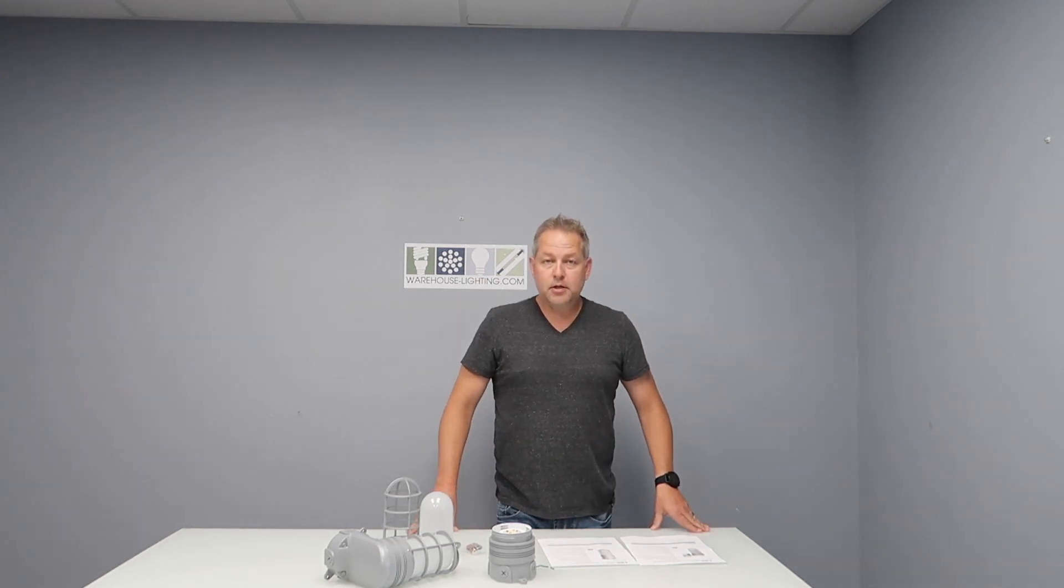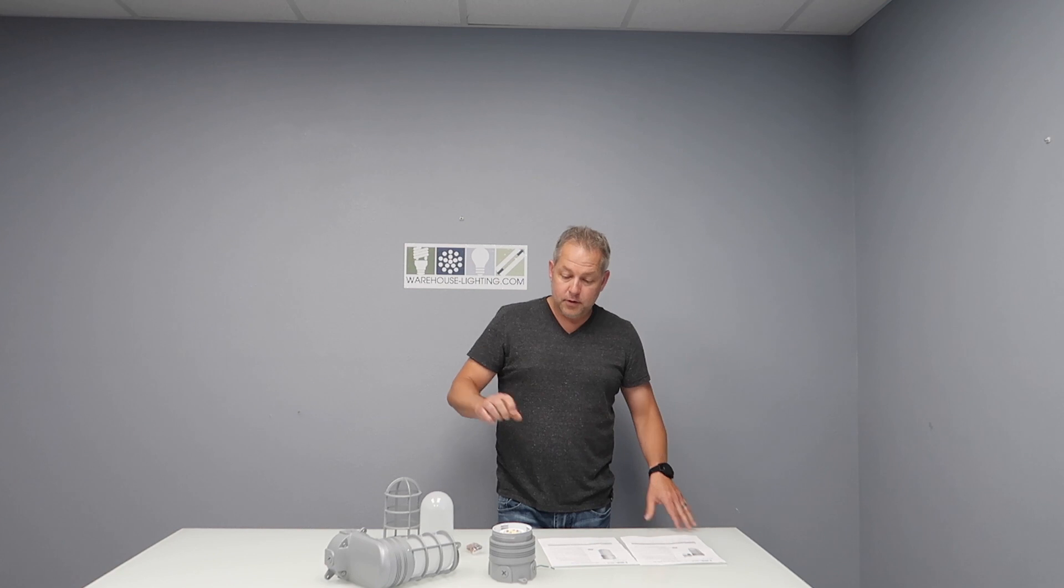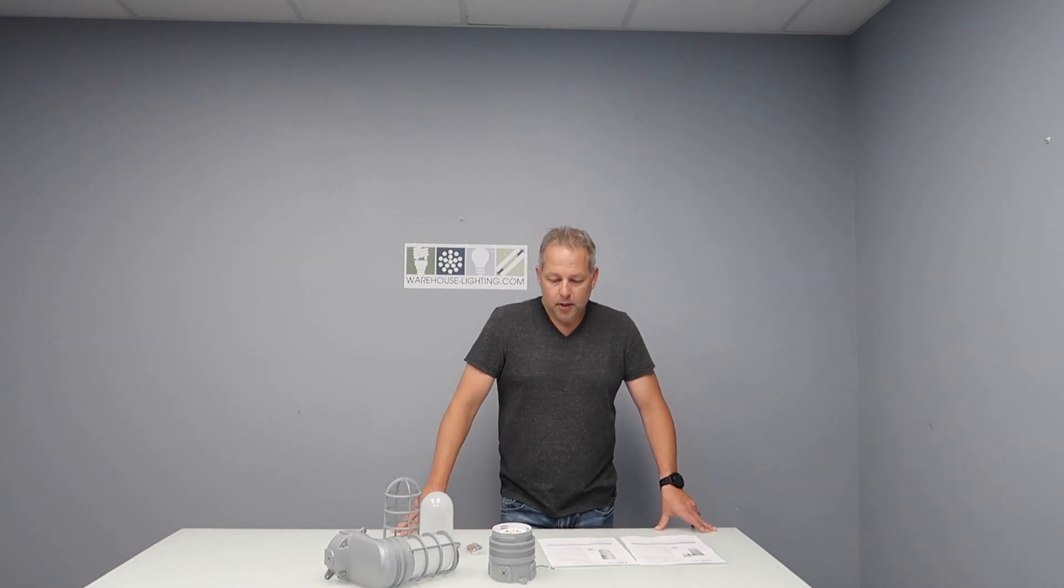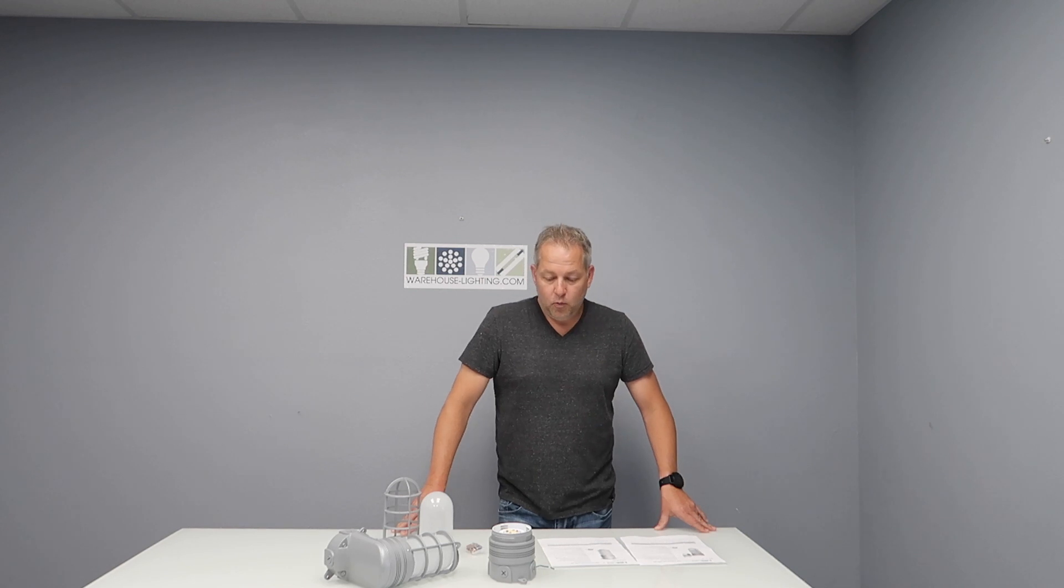It can handle pressurized water, so you can actually spray these off as long as they're tight and you've got it gasketed against the wall well. That means caulking it. With any of these fixtures, you want to make sure you caulk the connection between the wall and the fixture itself.